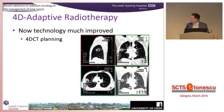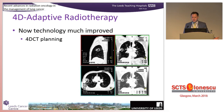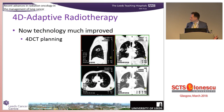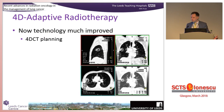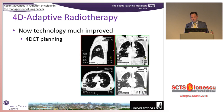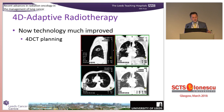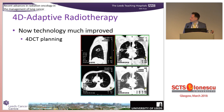For lung cancers, we now plan our patients with 4D CT - this is now standard of care. We can now assess where the tumour is, how much it's moving, and incorporate that into the planning algorithm. We can also adapt that if it's moving a lot, to gate the radiotherapy and allow for that in our planning.